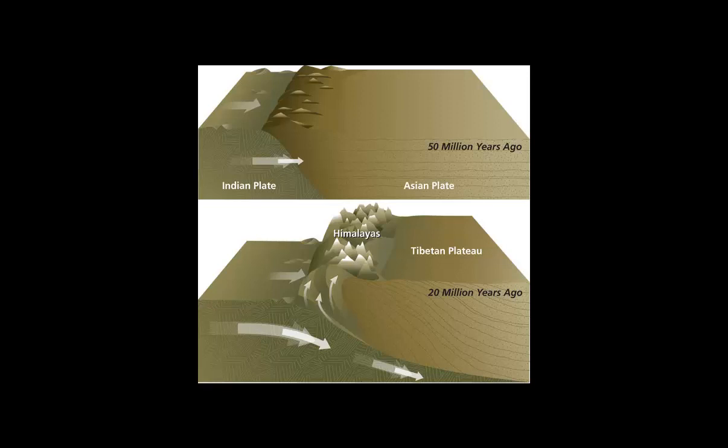But as the subduction occurs, not only we get huge mountains like the Himalayas, but notice how the Tibetan plate has been lifted, and we've got a Tibetan plateau. This is exactly what happened in Iran. That's why we have an Iranian plateau, because other plates are slipping under it and lifting it.